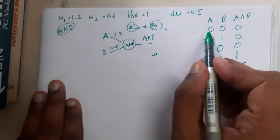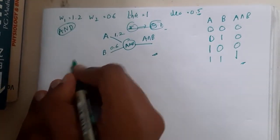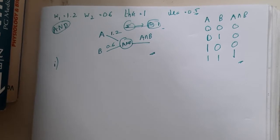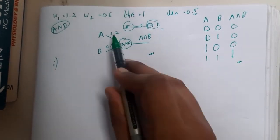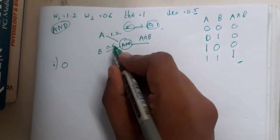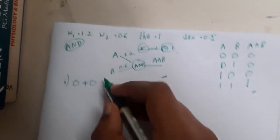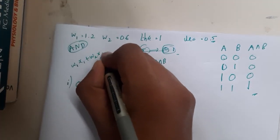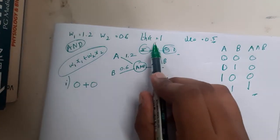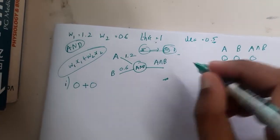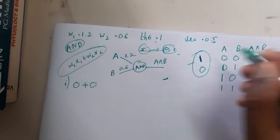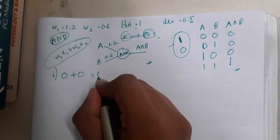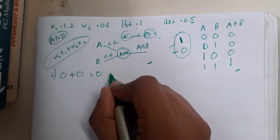Let us start with the simple diagram. For inputs A=0, B=0: 0×1.2 = 0 and 0×0.6 = 0. We calculate w1·x1 + w2·x2 and check if it is greater than or equal to the threshold. If yes, output is 1; otherwise 0. Here both are 0, sum is 0, which is less than threshold 1, so output is 0.